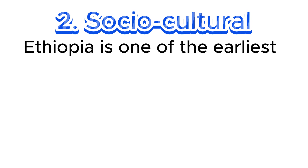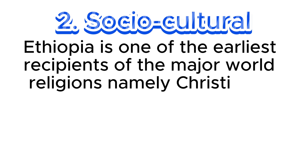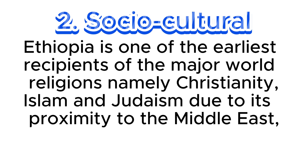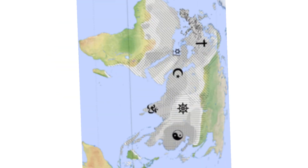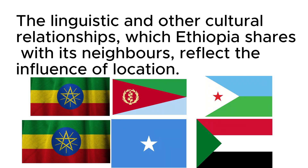Second, the socio-cultural implication. Ethiopia is one of the earliest recipients of the major world religions — namely Christianity, Islam, and Judaism — due to its proximity to the Middle East, which was the origin of these religions. The linguistic and other cultural relationships which Ethiopia shares with its neighbours also reflect the influence of its location.